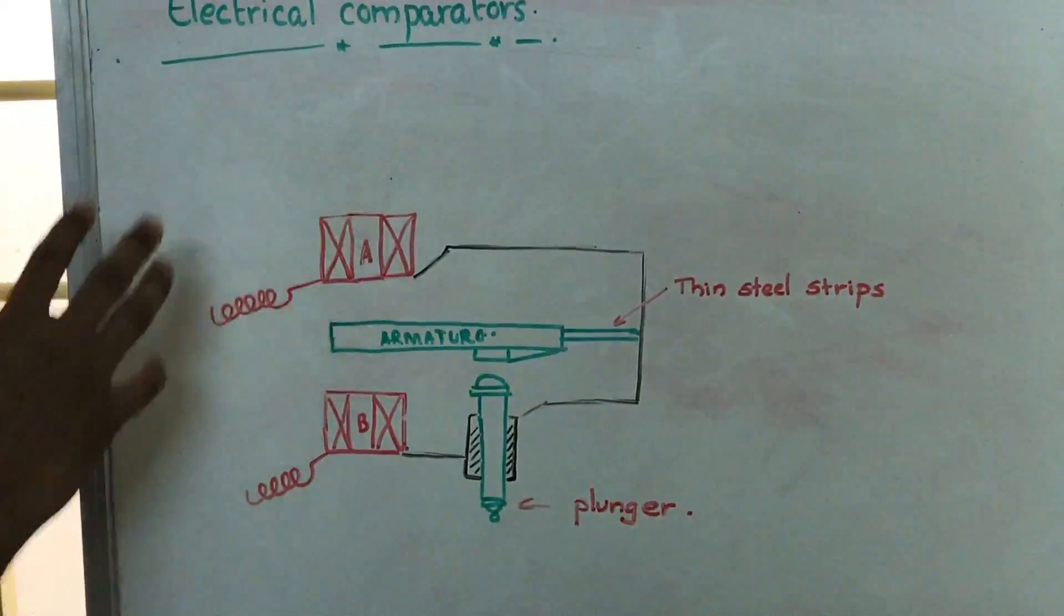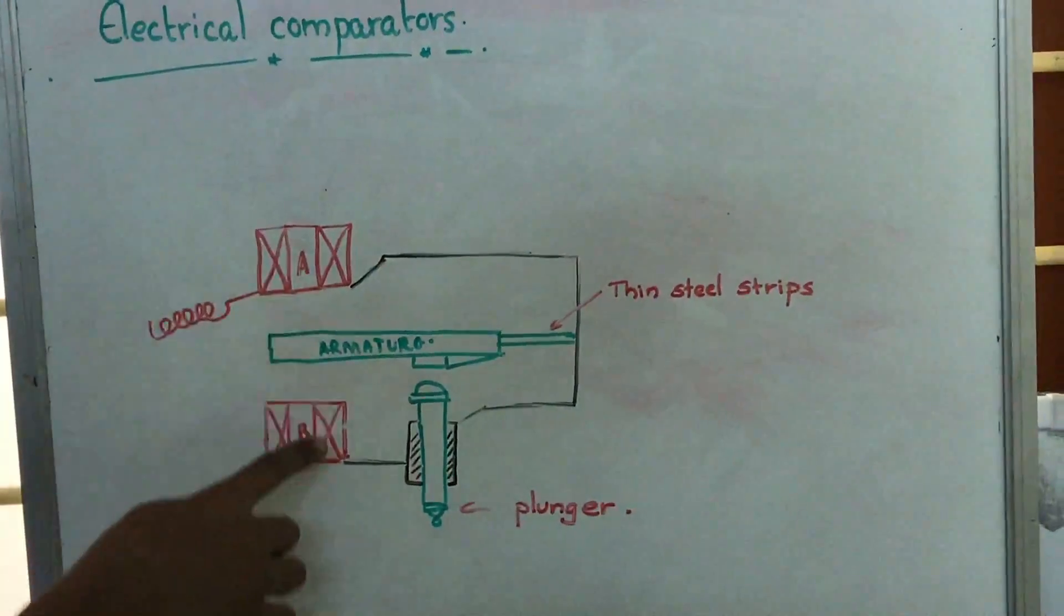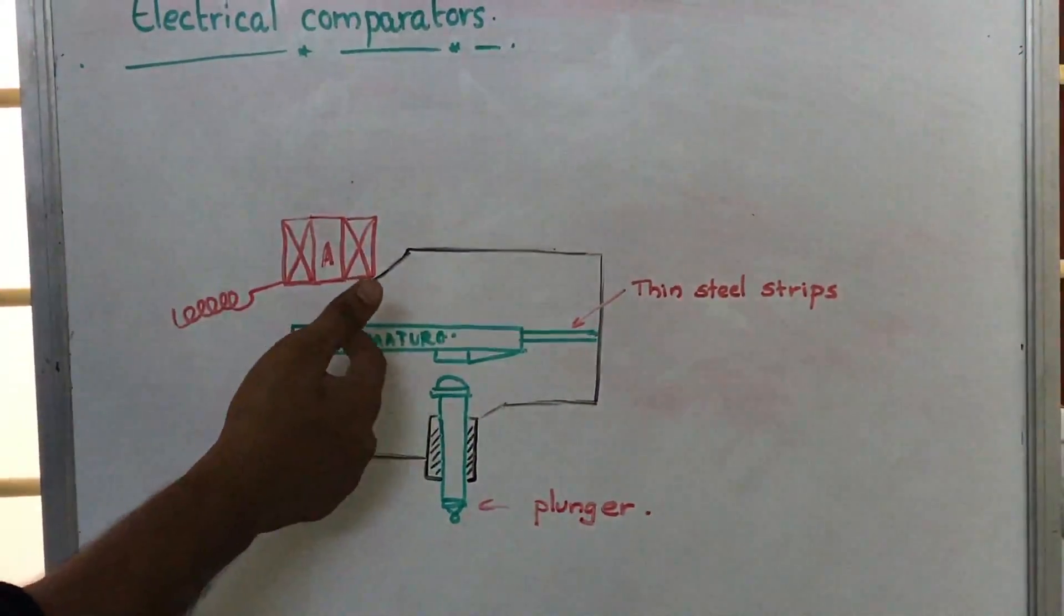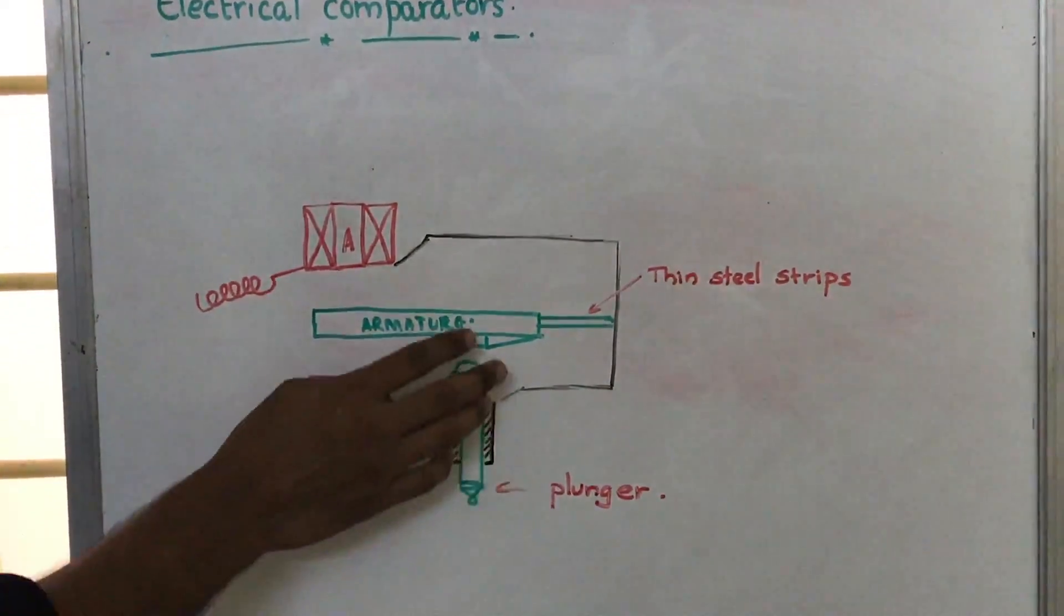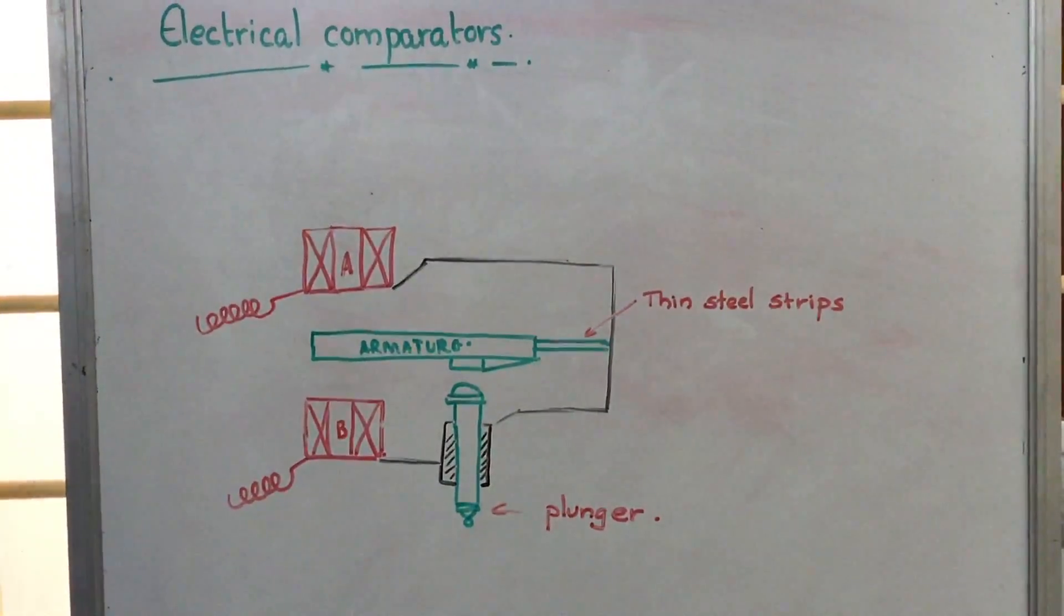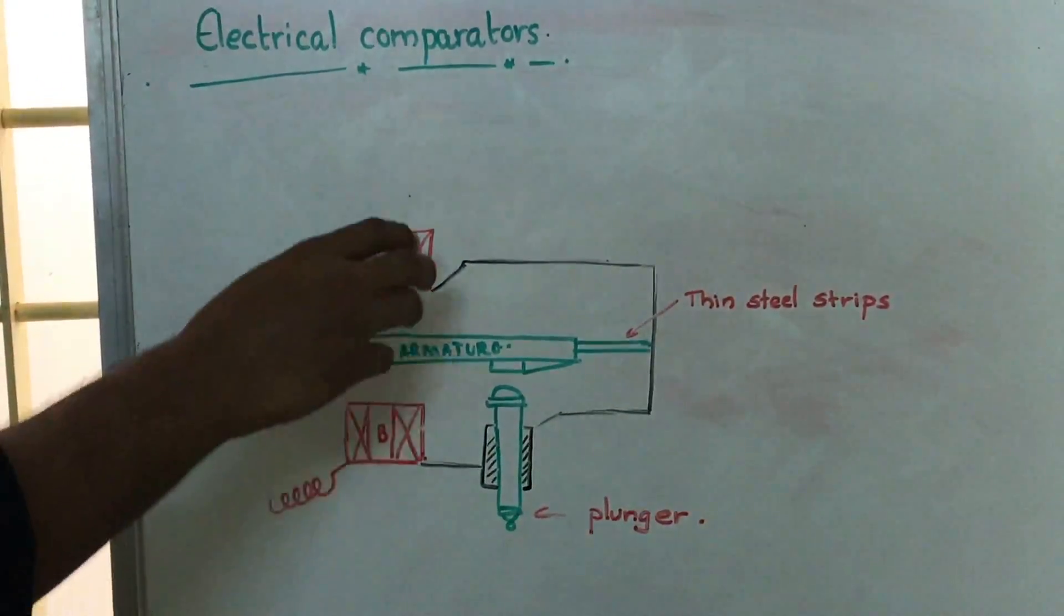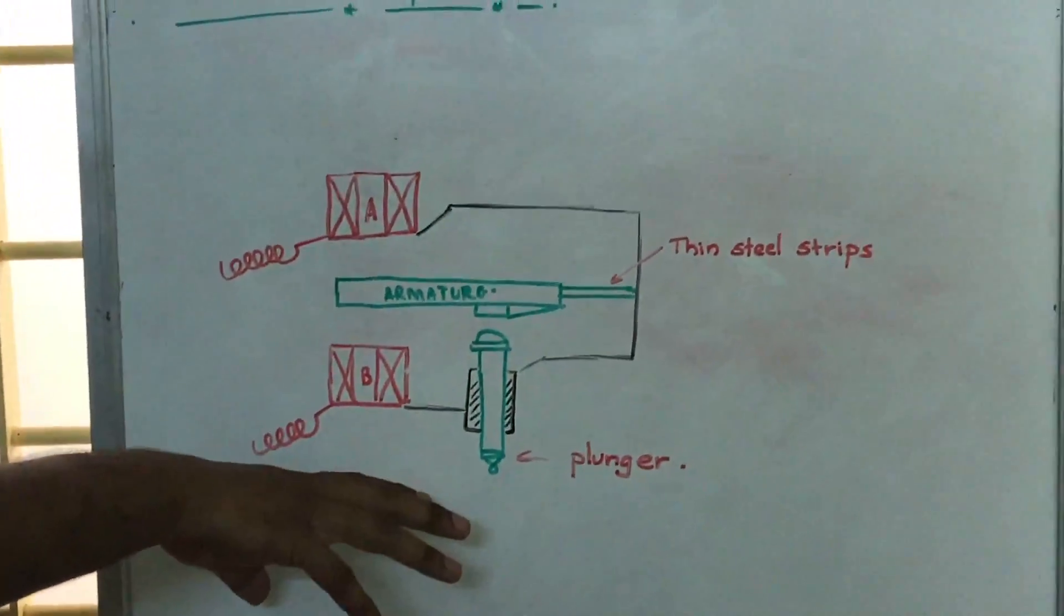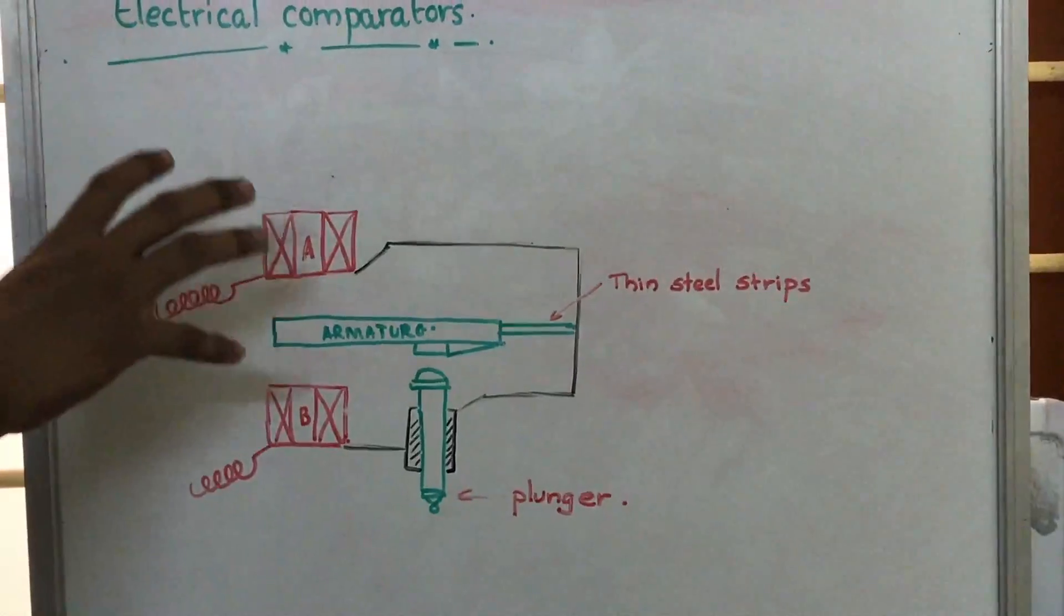There will be a galvanometer. So we have two coils on a Wheatstone bridge, and in between those two coils we have an armature and a plunger. Initially, when there is no motion of the plunger, this armature will be midway between these two coils and the Wheatstone bridge will be in a balanced condition. That means the galvanometer will show zero current—no deflection.